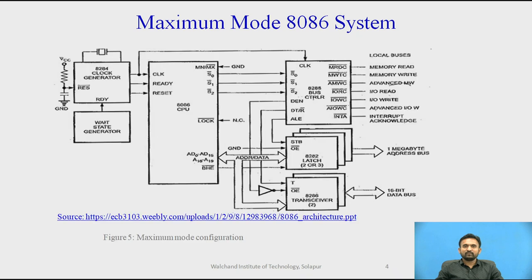Here we are observing the block diagram of the maximum mode system bus configuration, where the processor derives the status signals S2, S1, and S0. A chip called the bus controller derives the control signals using the status information.